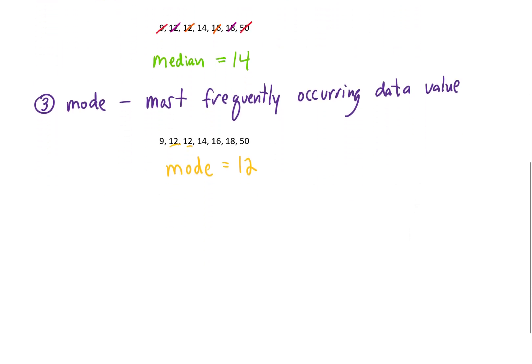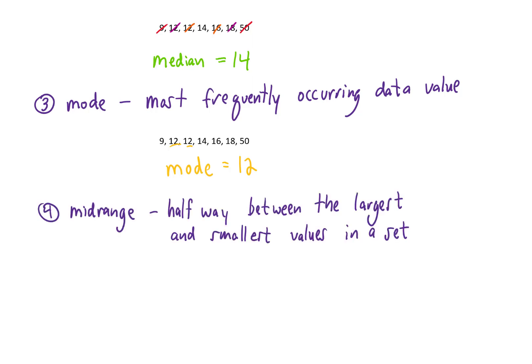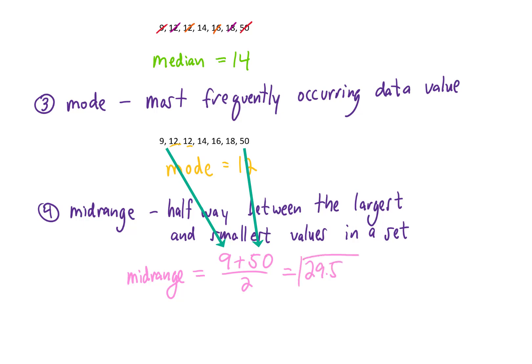There's one more measure of center: the midrange. The midrange is the halfway point between the largest value and the smallest value in a set. For this set of data, our midrange is 9 plus 50 divided by 2, giving us 29.5 — the halfway point between the lowest and largest values in our data set.